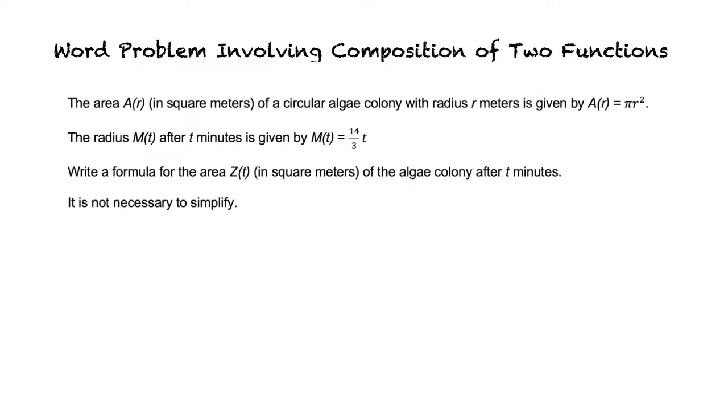The area of a circular algae colony with radius r meters is given by A(r) = πr². The radius after t minutes is given by M(t) = (14/3)t. Write a formula for the area Z(t) of the algae colony after t minutes.